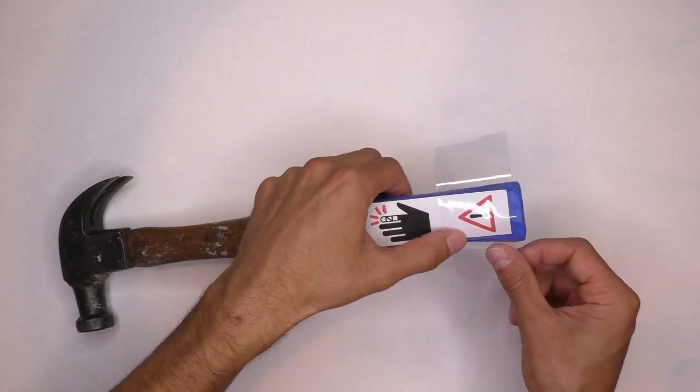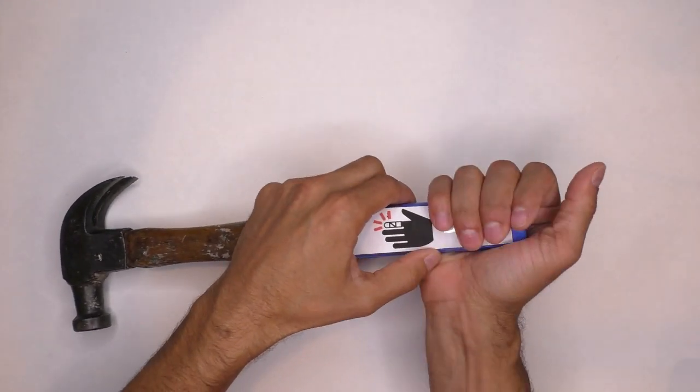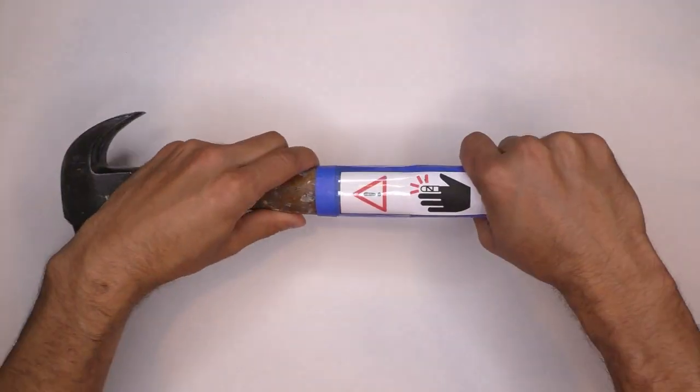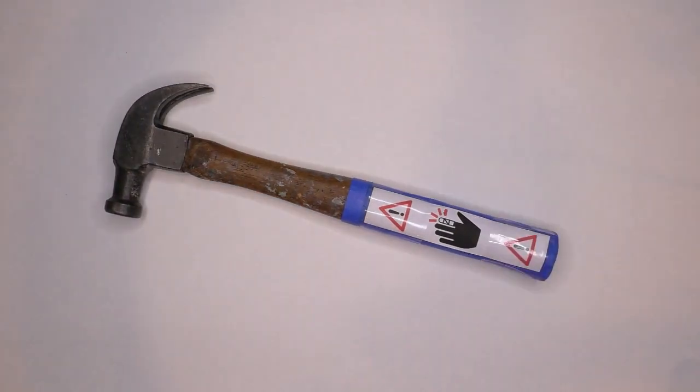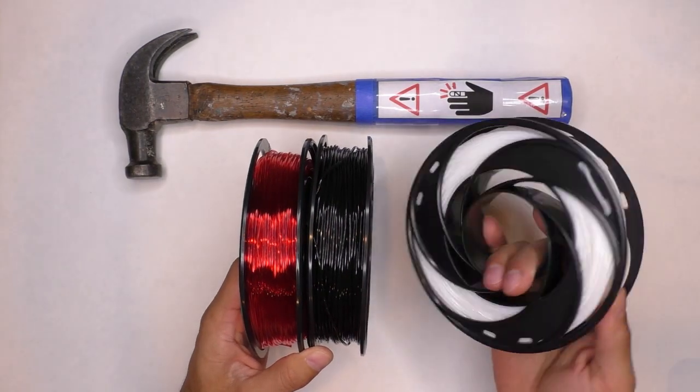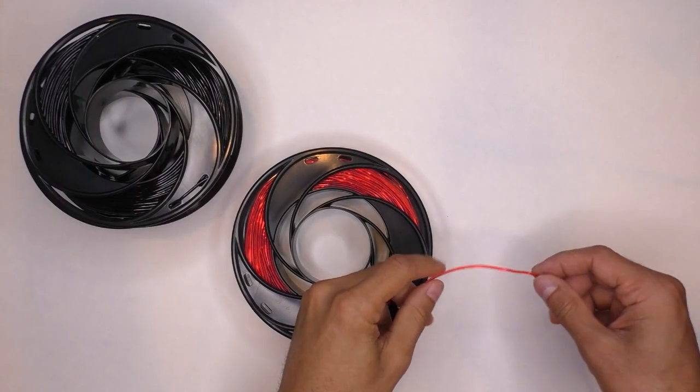I take that graphic that I printed out and apply it to the handle with some clear tape. This is the flexible filament that I used and I'm just going to show the difference between it and some standard PLA.